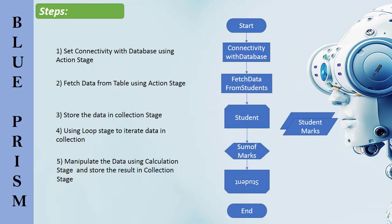Let me show you the steps involved in this flow diagram. I'm going to implement this in a business process. First, I'll create the table in SQL Server Management Studio and insert data. Then I'll fetch the records. To connect the database, I'll use an Action Stage on my canvas — the first step is connecting to the database using Action Stage.